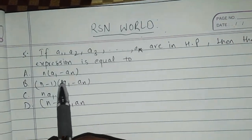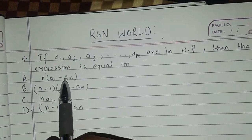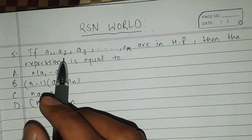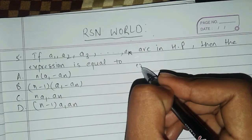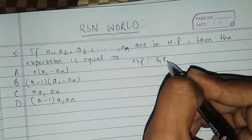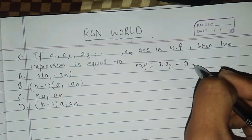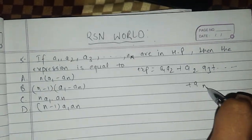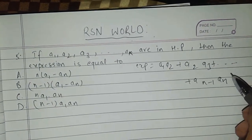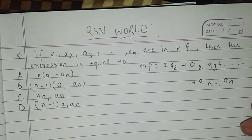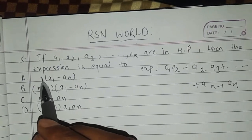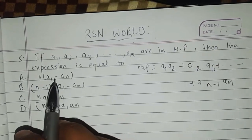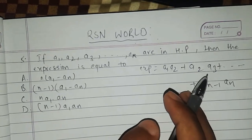We shall have to find out the expression for the sum. We have got the expression as a1·a2 + a2·a3 + ... + a(n-1)·an. We have four choices and we shall have to find out which one fits for this sum.